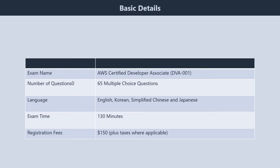Now we will talk about exam details. The Certified Developer Associate DVA-001 exam is 130 minutes long. The examination comprises 65 questions, and the candidate may encounter multiple choice and multi-response questions. The exam will cost 150 US dollars plus tax where applicable. However, there are no prerequisites. As far as the language of the exam is concerned, the exam is available in only four languages.